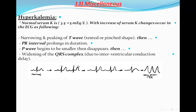Tenting of the T wave. Then the second change will be prolongation of the PR interval, and then with further stretching of the PR interval, the P wave will diminish in its amplitude and then disappear. Then the QRS complex will be stretched again and again, and then the sine wave will be produced to produce this shape.